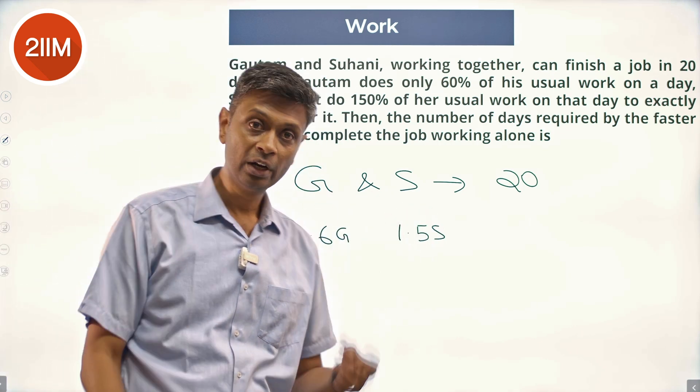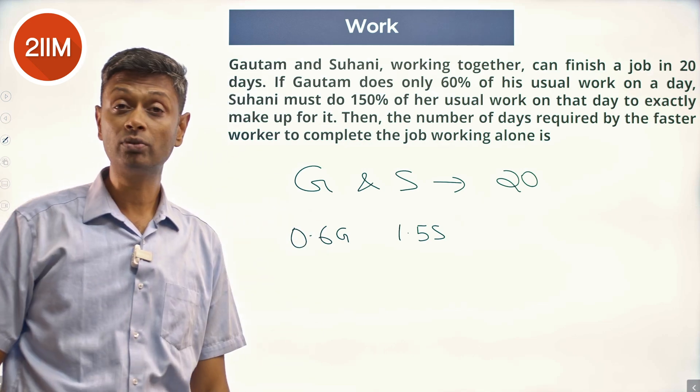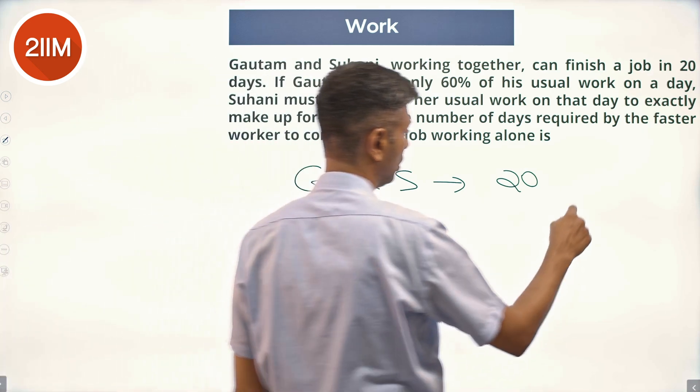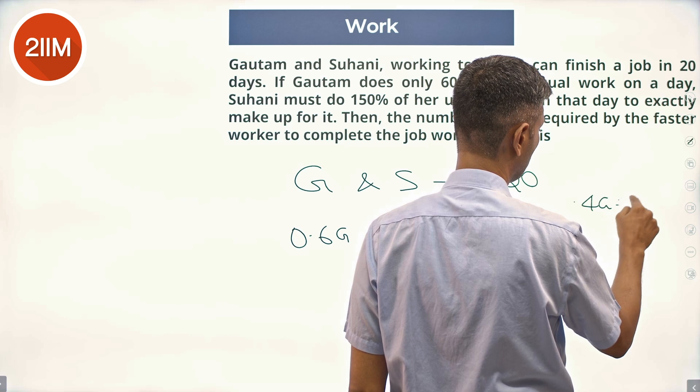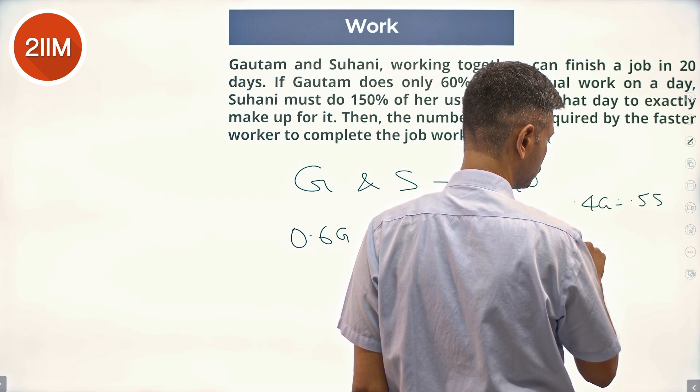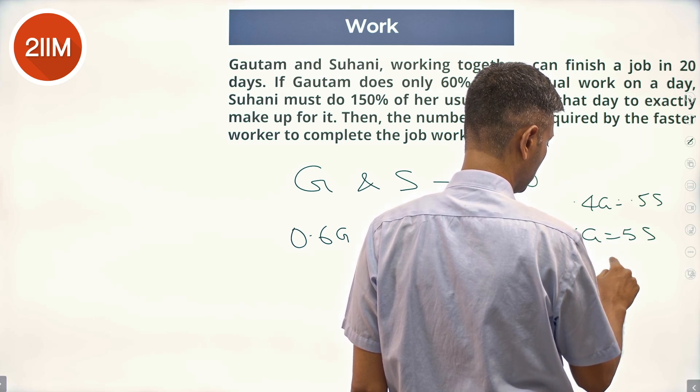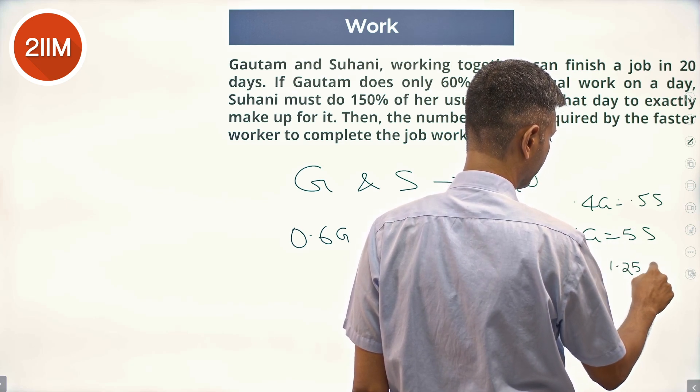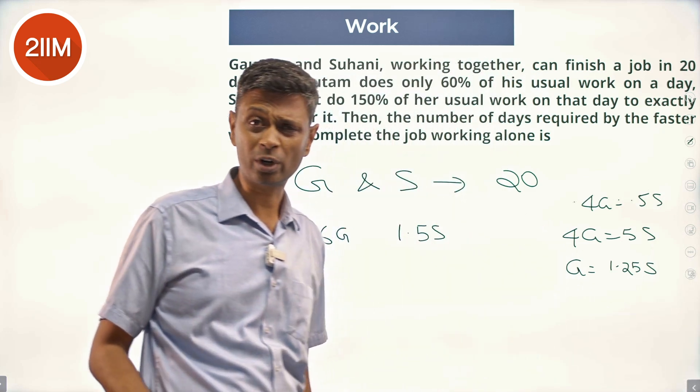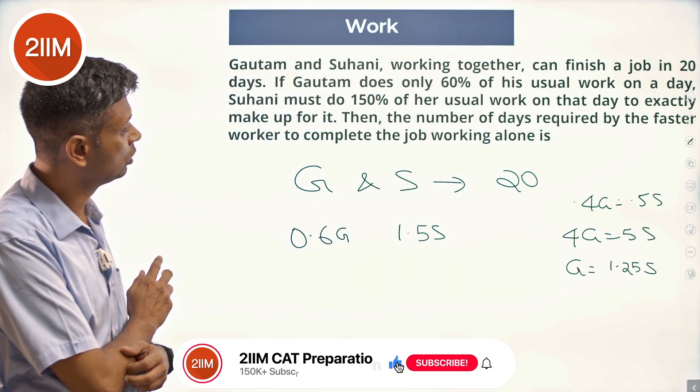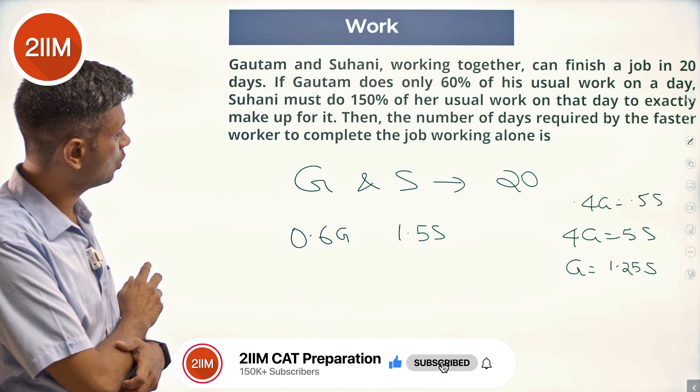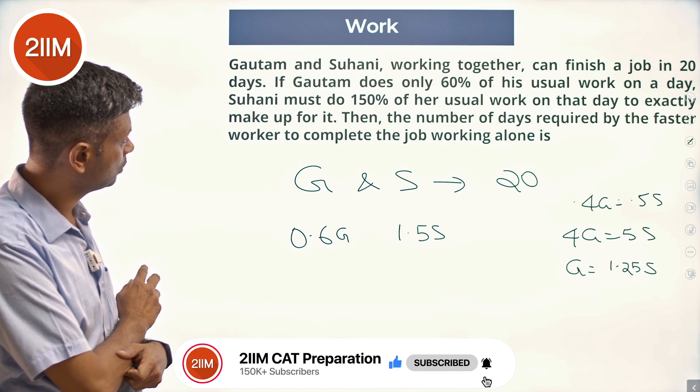0.5S more, it can offset Gautam goofing off for 0.4G. So 0.4G equals 0.5S, 4G equals 5S, or G is 1.25S, 5 by 4 times S.